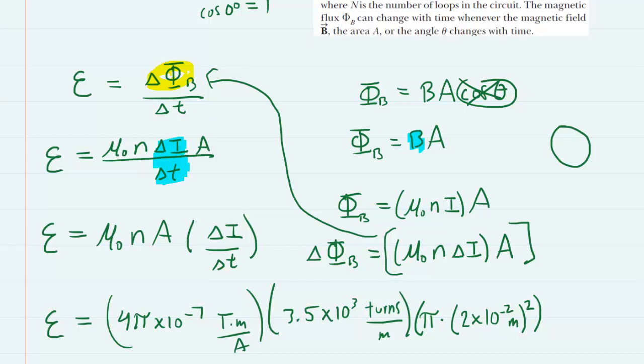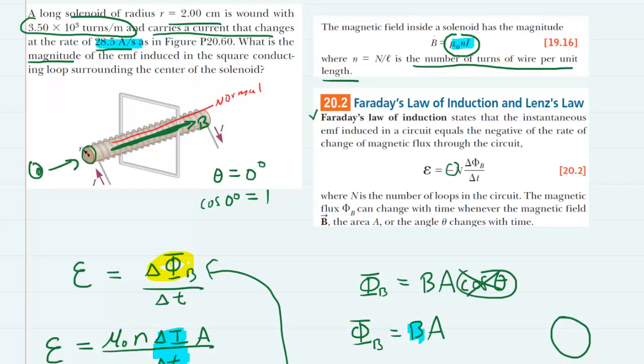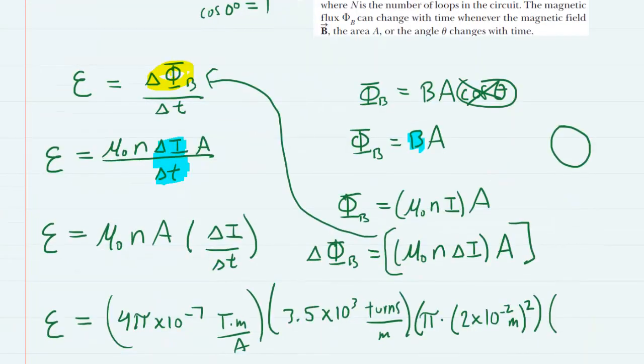And then finally we multiply by that Δi over Δt value, and that again was the 28.5 amps per second. That is the rate at which the current in the solenoid is changing.